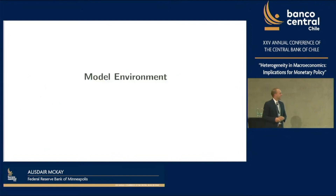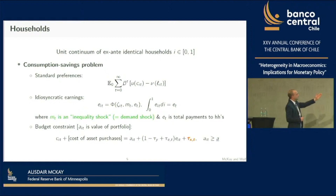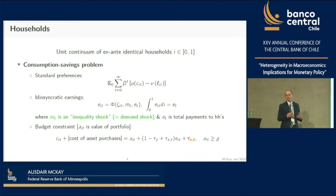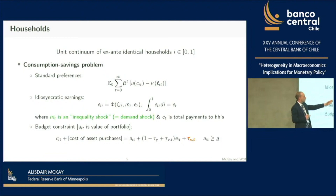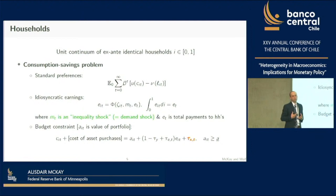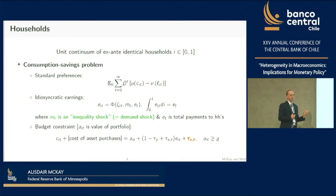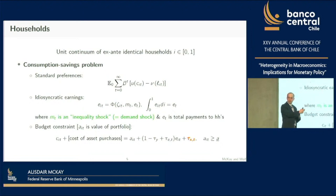The model: we have a continuum of households with preferences for consumption and disutility for labor supply. Earnings E_it are generated from an incidence function—E_t is aggregate earnings, zeta_it is someone's exogenous idiosyncratic state, and this function maps aggregate earnings and your particular type to your individual earnings. The variable M is an aggregate inequality shock that moves around the income distribution. The distribution of income can depend on the level of income, which builds in differential exposure to the business cycle.